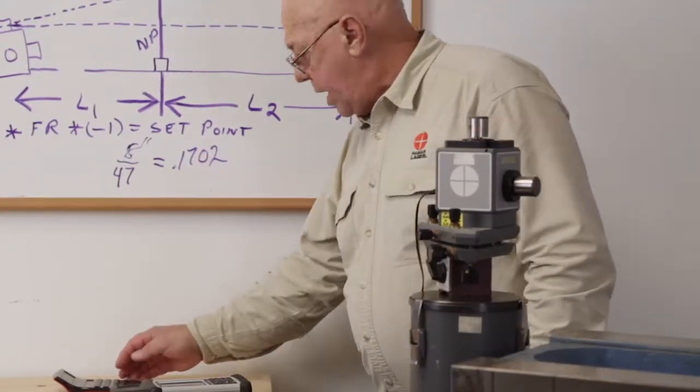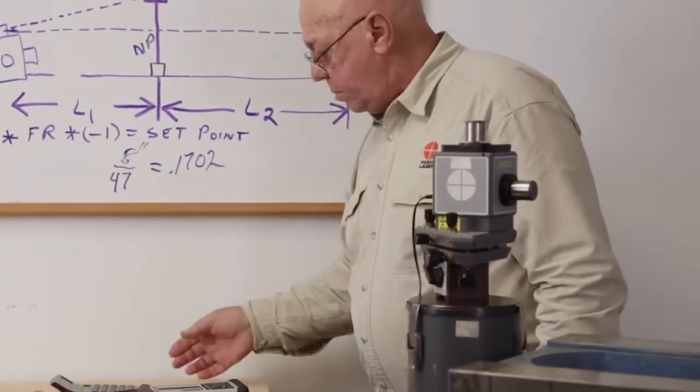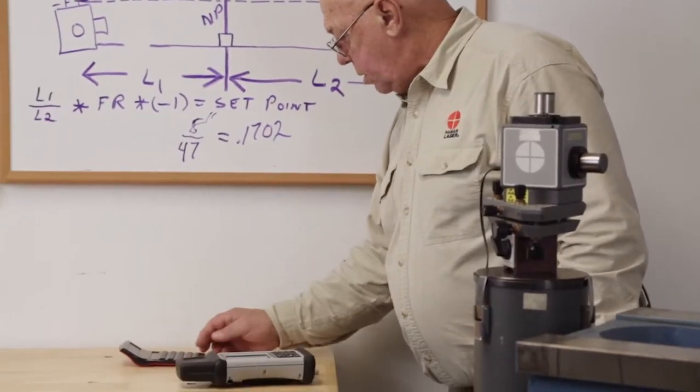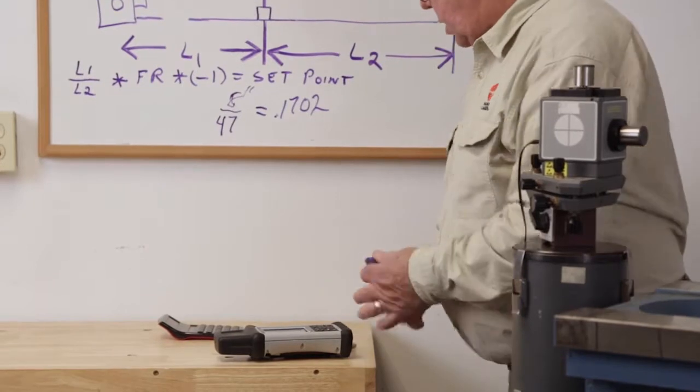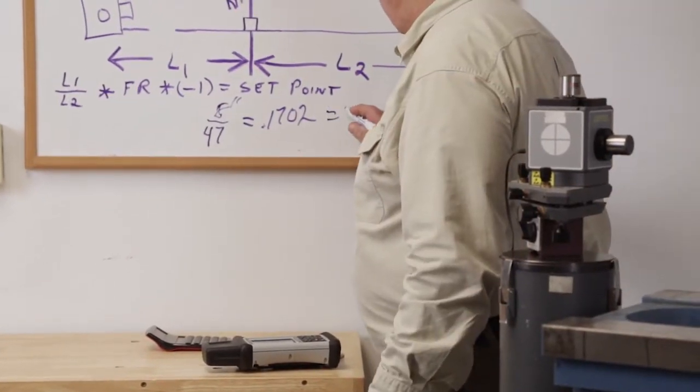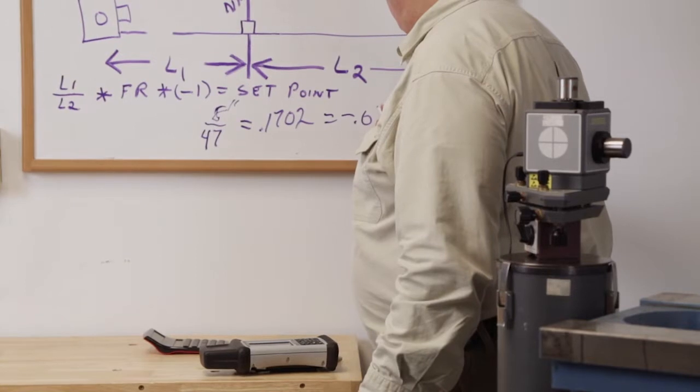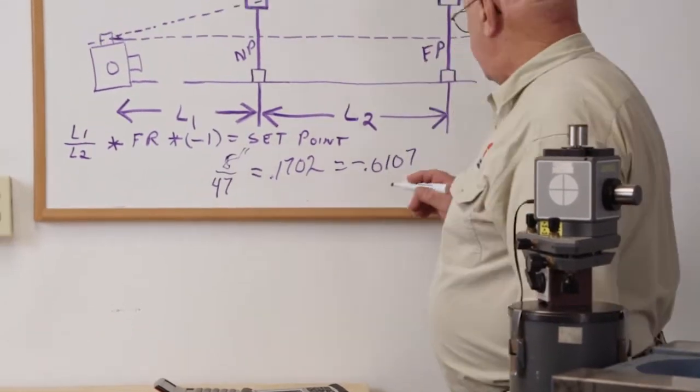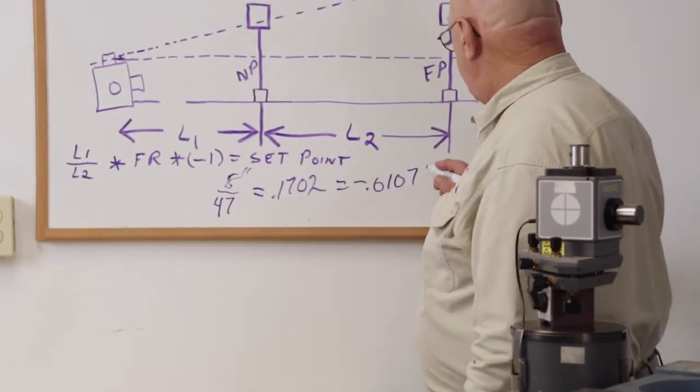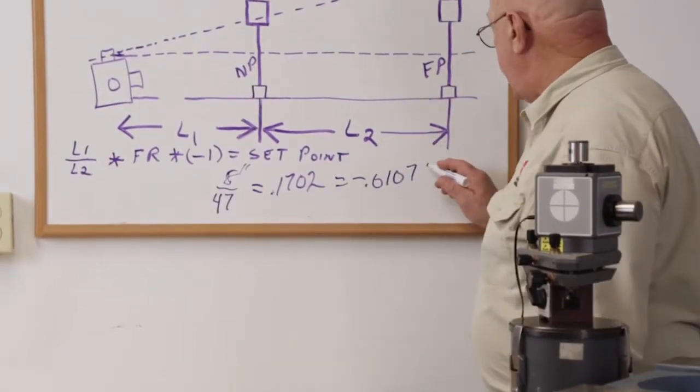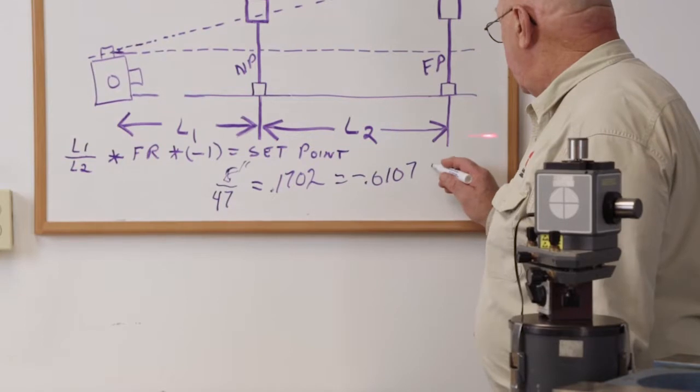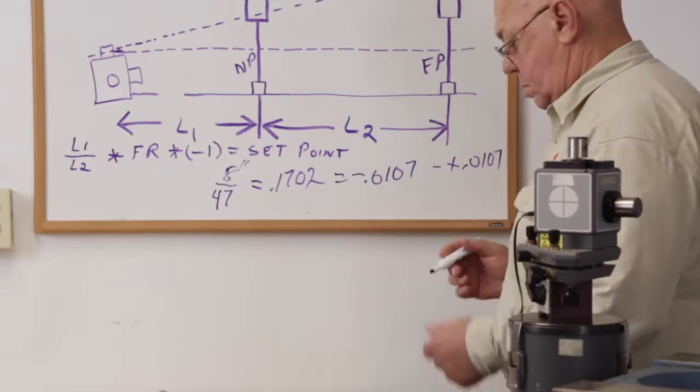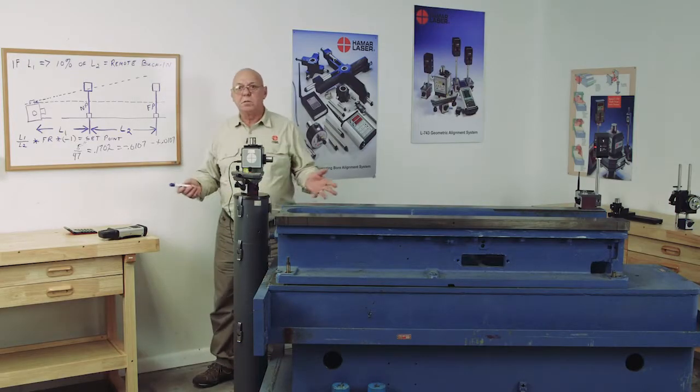So, now my far reading is minus 63 thousandths. So, I'm going to multiply that. My multiplier times minus 63 thousandths. And I get minus 10.7 thousandths. Multiply that times a negative one. I get a plus 10.7 thousandths.